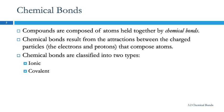All atoms have positively charged protons and negatively charged electrons, and so that's where we get the attractions. We can classify chemical bonds into two groups, ionic or covalent. We'll talk about each of those.